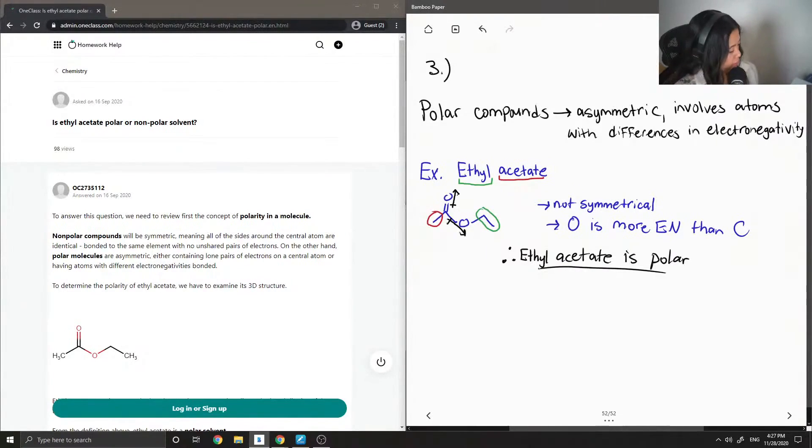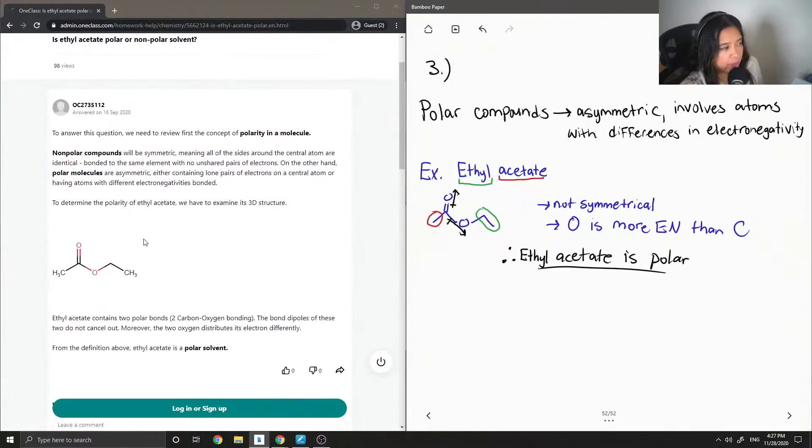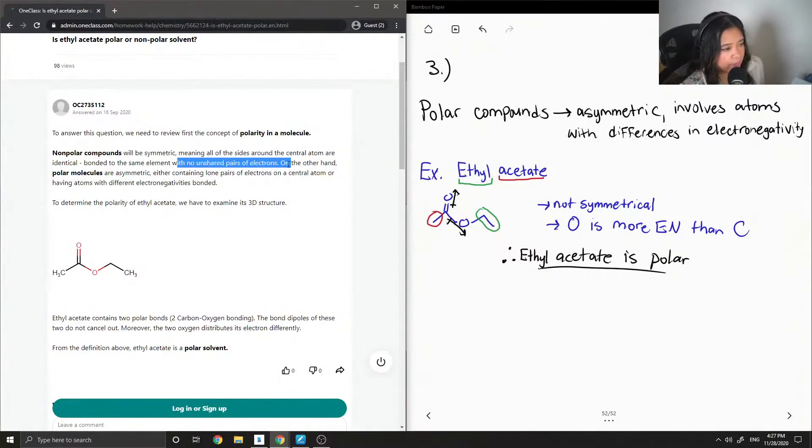So let's see what the junior tutor said. To answer this question, we need to review first the concept of polarity in a molecule. Nonpolar compounds will be symmetric, meaning all of the sides around the central atom are identical, bonded to the same element with no unshared pairs of electrons. So this is an important thing to note.